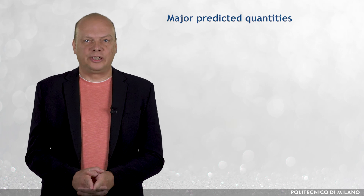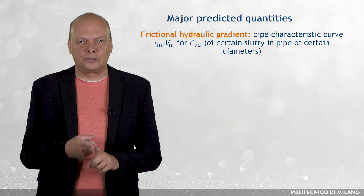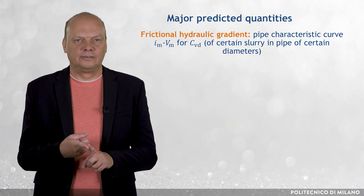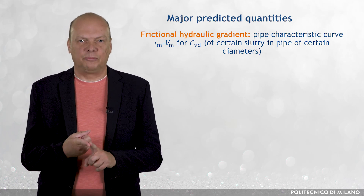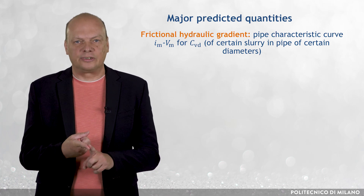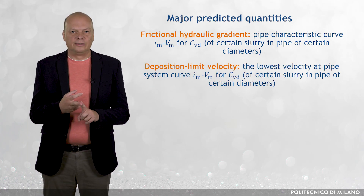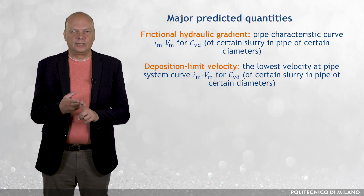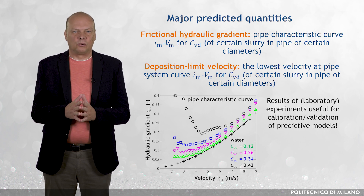There are two major predicted quantities for transport system design and operation. The first one is the frictional hydraulic gradient as a function of flow velocity. For the range of velocities, the relation gives a pipe characteristic curve for a certain slurry in a pipe of a certain diameter. The second one is the deposition limit velocity, which is the lowest velocity at which the pipeline system should be operated. There are models available for prediction of these flow quantities.